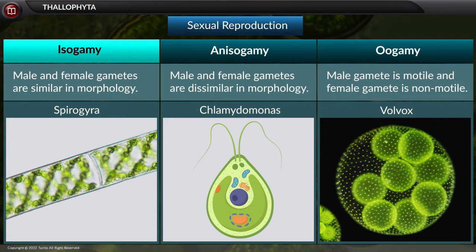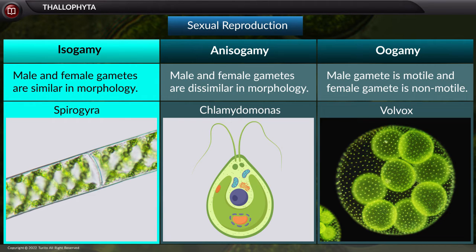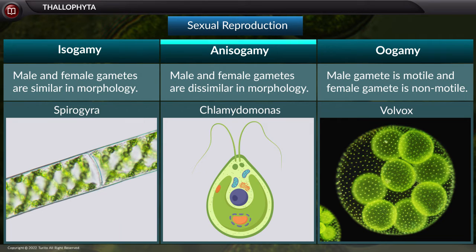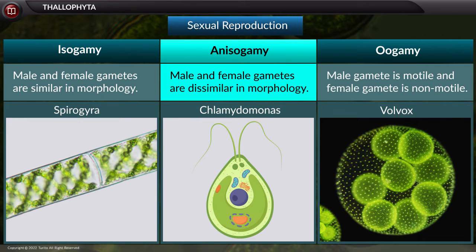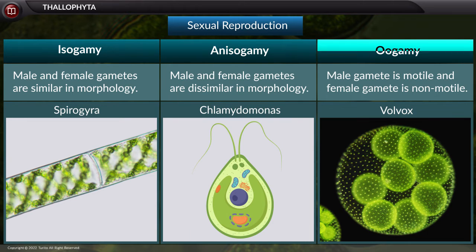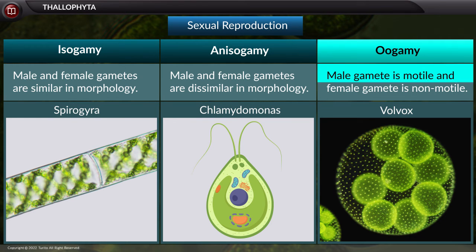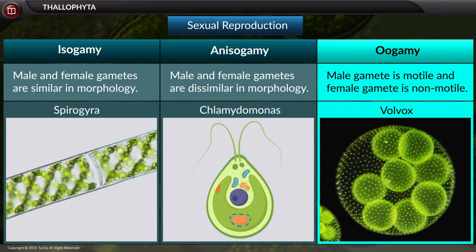Isogamy is a type of sexual reproduction that involves gametes that are similar in morphology; it is seen in the case of Spirogyra. Anisogamy involves male and female gametes that are dissimilar in morphology, and is seen in Chlamydomonas. Oogamy involves a small motile male gamete and a large non-motile female gamete, and is seen in Volvox.